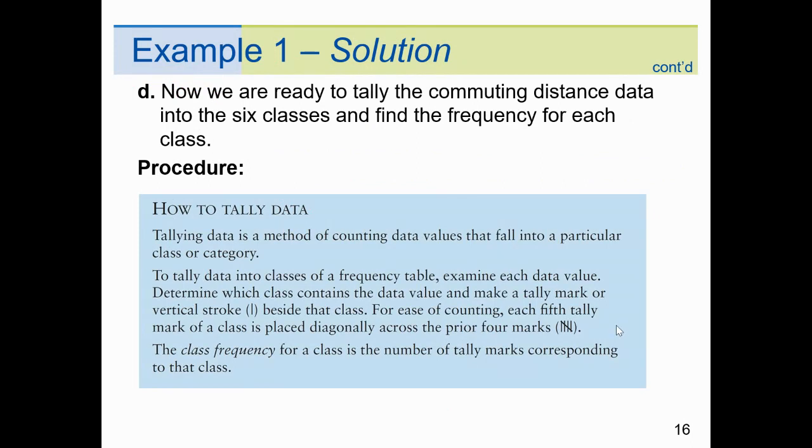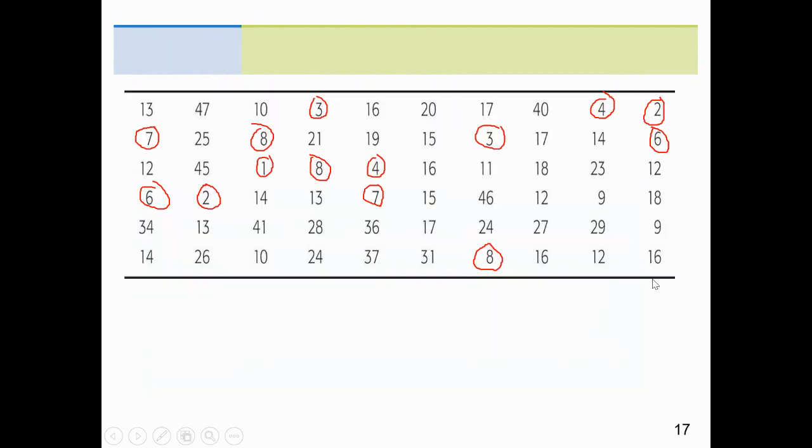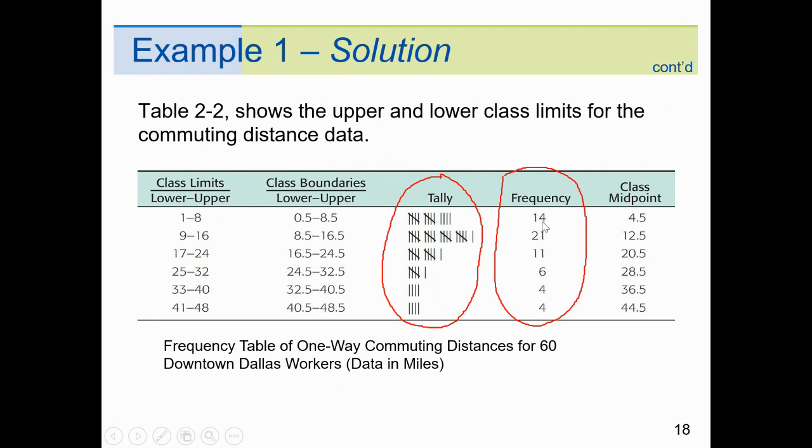I say, now we're ready to tally the commuting distances. Go back to the chart and find out, hey, how many people actually traveled between one and eight miles to work, from nine to 16 miles to work. And what we're using is this little tally system. All right, one, two, three, four, and then slide a line. All right, so here what I did is took the raw data, and I just circled the commuting distances that fell between one and eight miles inclusive. If we count it, I've got three there, four, five, six, seven, eight, nine, ten, eleven, twelve, thirteen. And there were fourteen. Fourteen people had to commute between one and eight miles inclusive. And there it is, fourteen. Do the same from nine to sixteen to twenty-one. People that commuted between seventeen and twenty-four, there were eleven. Followed by six, four, and four. Now, while I'm at it, let me just talk about class midpoint.